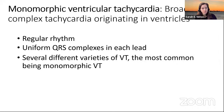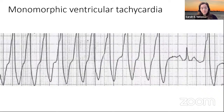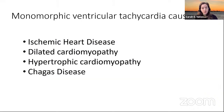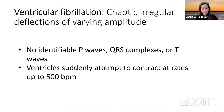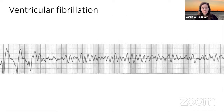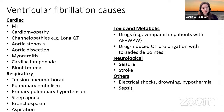Monomorphic VTac — because it's monomorphic, you're seeing the same complex over and over. That's obviously not a good heart rhythm and needs to be acutely addressed. It can impair cardiac output and degenerate to VFib, which involves no identifiable P waves. Because you're not able to contract in a synchronized manner, you get immediate loss of cardiac output and it can progress all the way to asystole. There are a slew of causes — generally speaking, our H's and T's from the ACLS algorithm is what we need to think about.